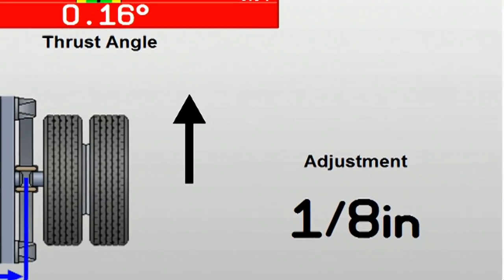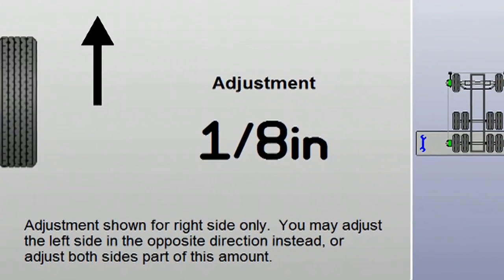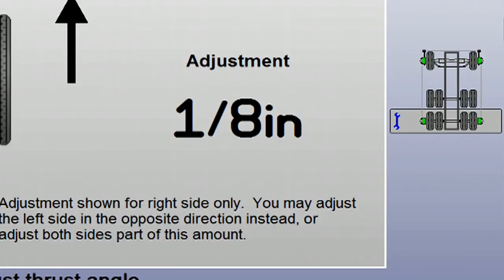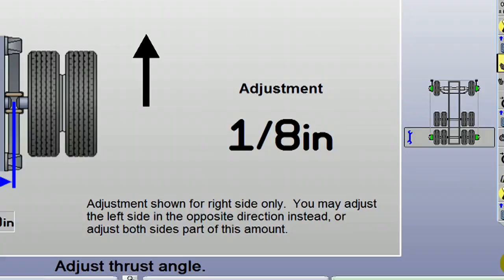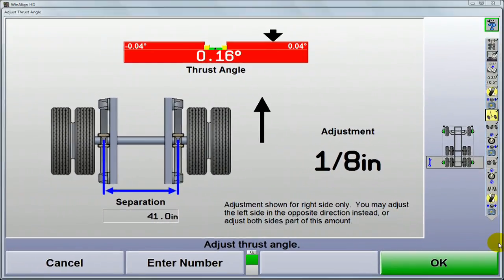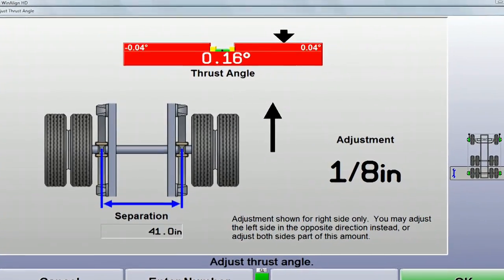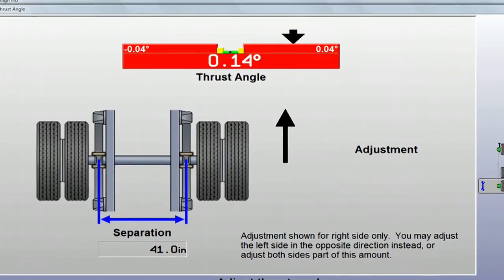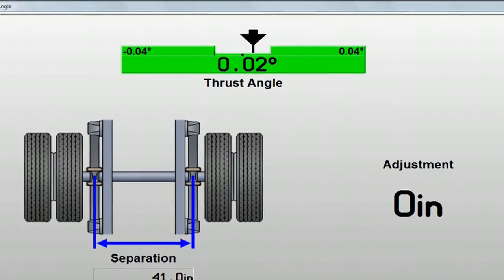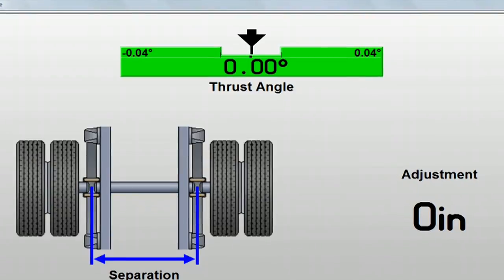If shims are used for the adjustment, the required shim correction is automatically computed and displayed here. This saves time by taking all the guesswork out of shimming axles. While making the correction, simply watch the bar graph. Adjust until the bar graph is green and the arrow is centered in the valley of the graph.